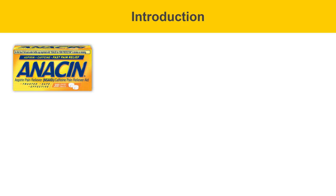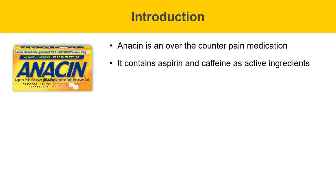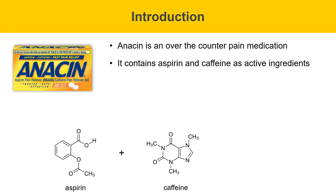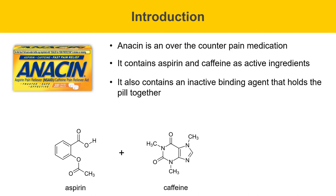This is Anacin. It is an over-the-counter pain medication. It contains aspirin and caffeine as active ingredients. Here's the structure of aspirin and here's the structure of caffeine. It also contains an inactive binding agent that holds the pills together.